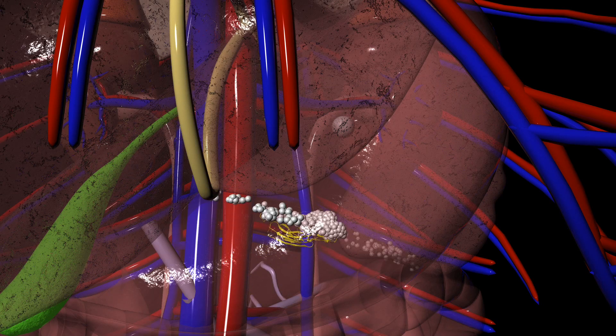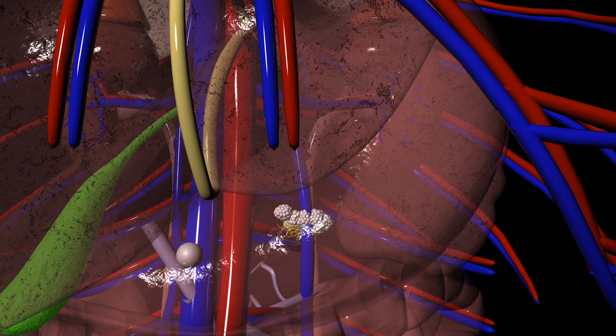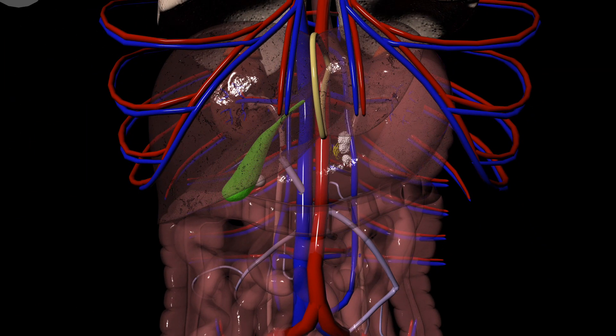COMT inhibitors will bind to COMT and stop it from breaking down levodopa. COMT can be found throughout the body, so COMT inhibitors can work in the bloodstream as well.